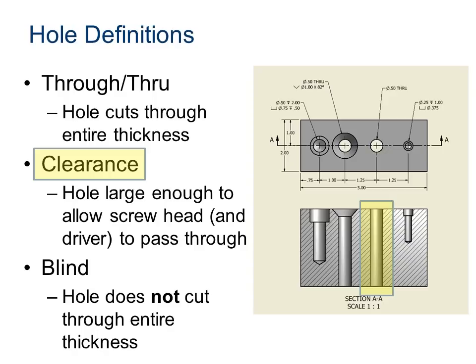Next, we have a clearance hole. Now, a clearance hole is a through hole, but it's also a hole that allows room for a screw head or even for the screwdriver to fit through it. A clearance hole is a hole where you allow extra space for whatever is going to fit inside there. It is a through hole, but it's also called a clearance hole. A special kind of a through hole.